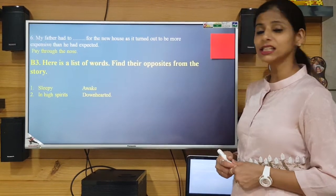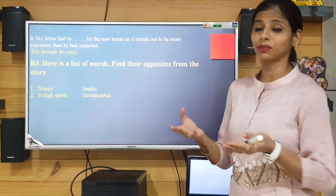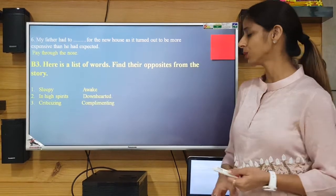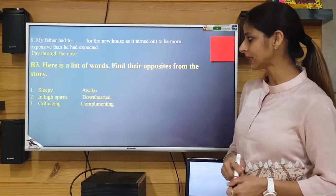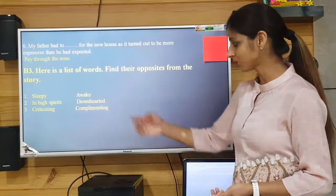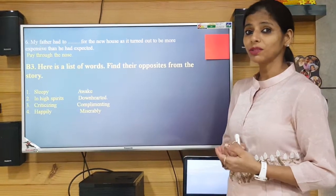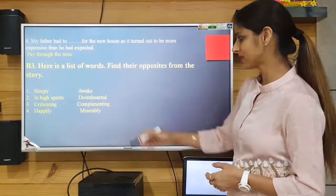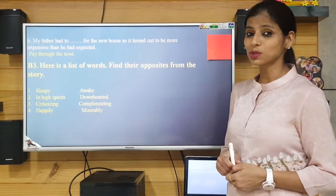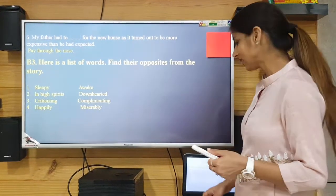The second antonym: 'in high spirits' — the opposite is 'downhearted.' In high spirits means full of confidence, while downhearted means very low in confidence. Third: 'criticizing' — the opposite is 'complimenting,' as the wolf complimented the house dog for his good appearance. Fourth: 'happily' — the opposite is 'miserably,' as the house dog told the wolf that he was living in the woods miserably.